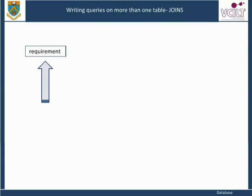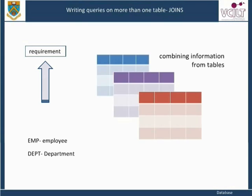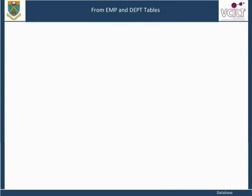It is not usually very long before a requirement arises to combine information from more than one table into one coherent query result. For example, using the employee and department tables, we may wish to display the details of employee numbers and names alongside the name of the department in which employees work. To do this, we will need to combine information from both tables, as the employee details are stored in the employee table, whilst the department name information is stored in the department table. The first point to note is that this will mean listing both the employee and department tables in the table list following the FROM keyword in the query.